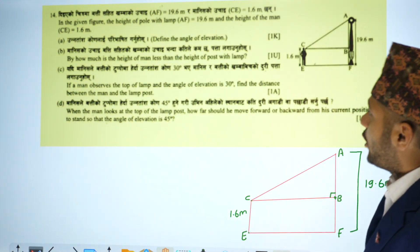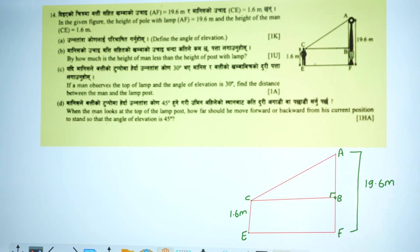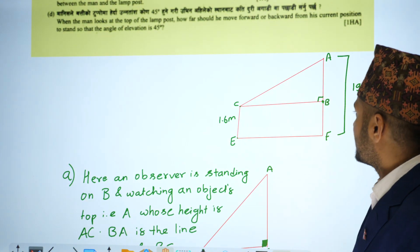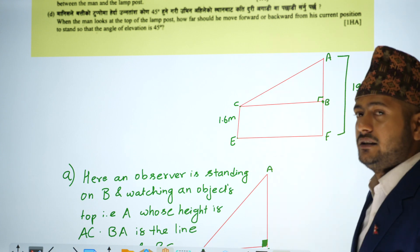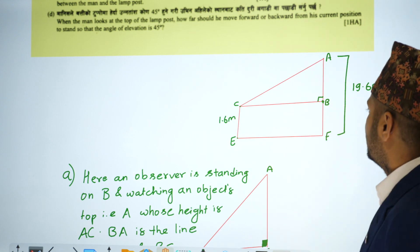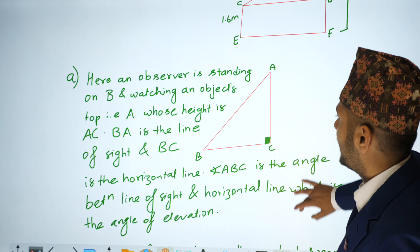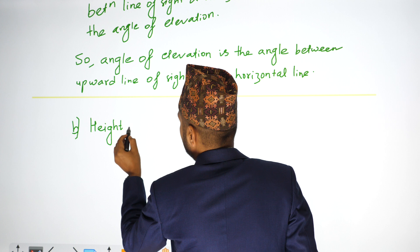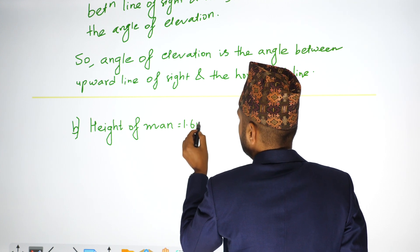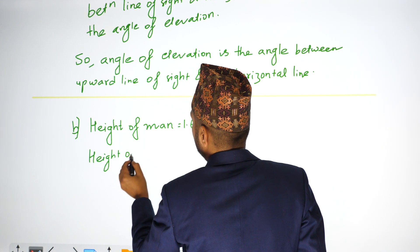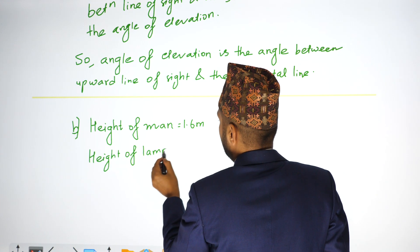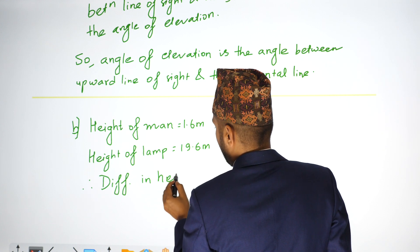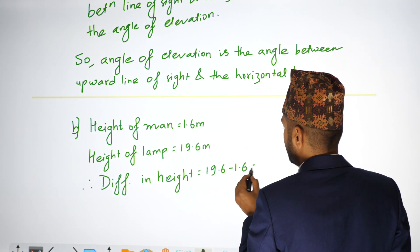The next question is: by how much is the height of the man less than the height of the post with the lamp? The height of the lamp post is 19.6 meters and the height of the man is 1.6 meters. Therefore, the difference in height is 19.6 minus 1.6 equals 18 meters.